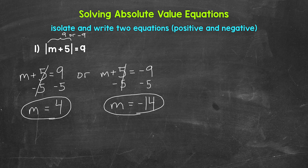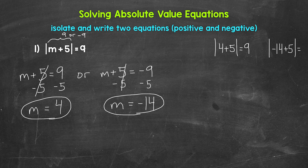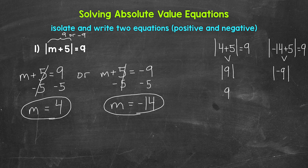Let's check these solutions by plugging them in for m. We have the absolute value of 4 plus 5 equals 9, and the absolute value of negative 14 plus 5 equals 9. For the first: 4 plus 5 gives us 9, and the absolute value of 9 is 9, so that is correct. For the second: negative 14 plus 5 gives us negative 9, so we have the absolute value of negative 9, which gives us 9 as well. So we are correct. Those are our two solutions.